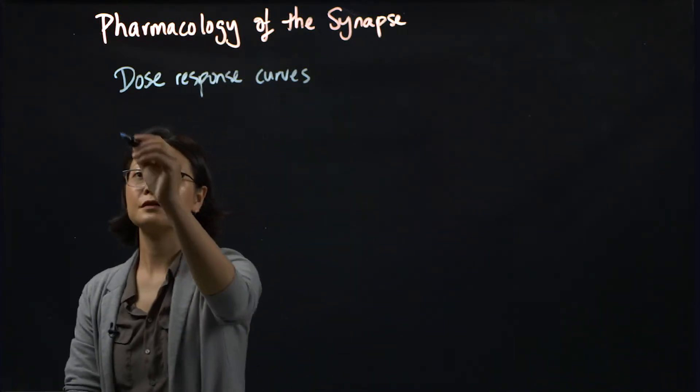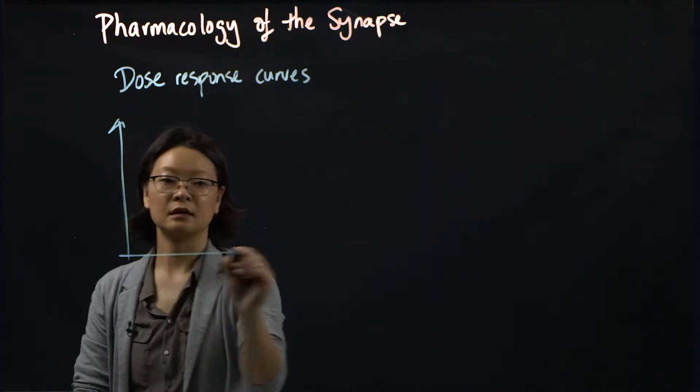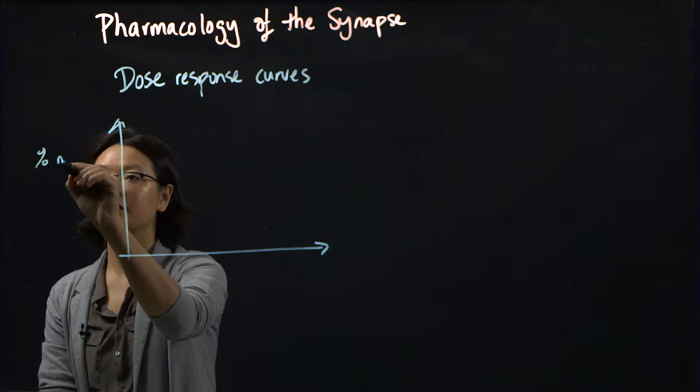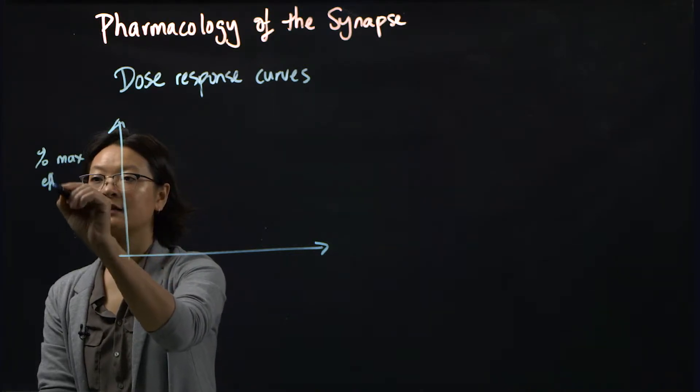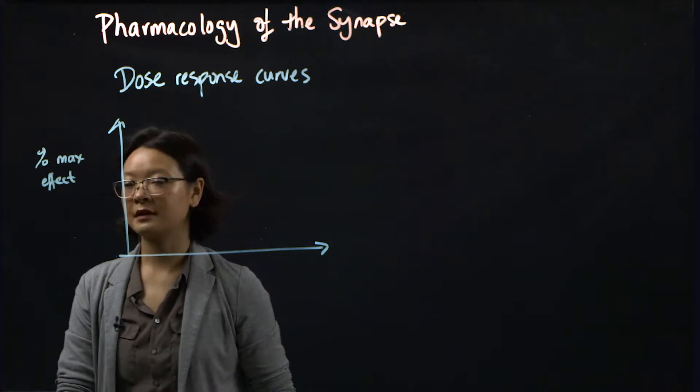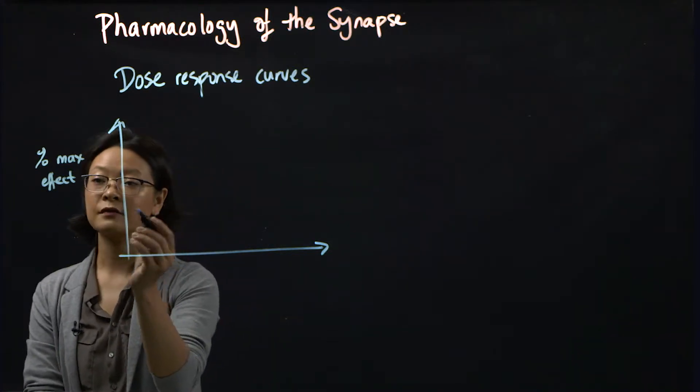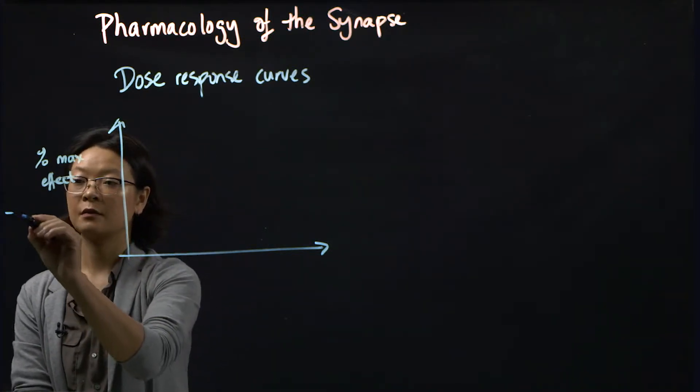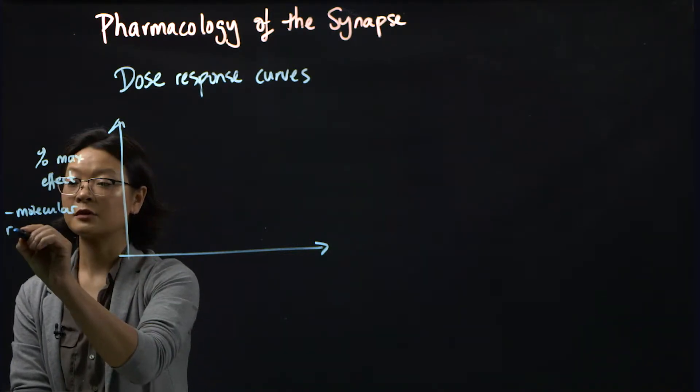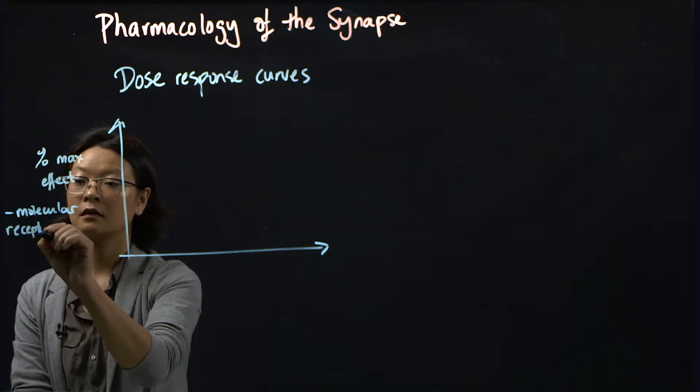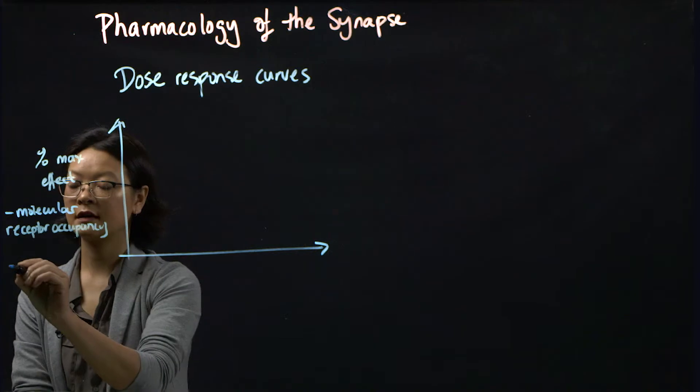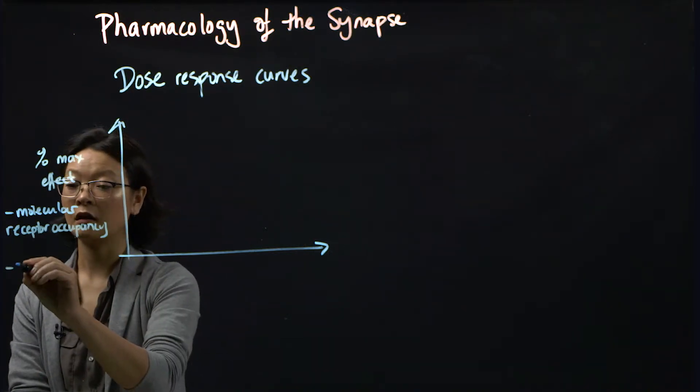So if I draw a dose response curve like this, where this is the percent of maximal effect. And in pharmacology, this can actually pertain to a lot of different things. So this could be something molecular, such as receptor occupancy.